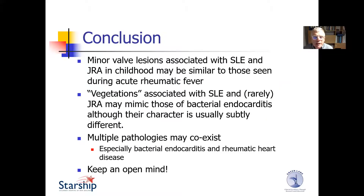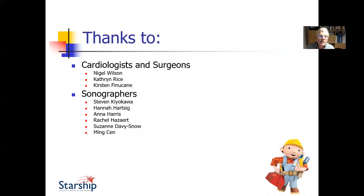In conclusion, minor valve lesions are associated with SLE and JRA in childhood and may be similar to those seen during acute rheumatic fever. Vegetations associated with SLE and JRA may mimic those of bacterial endocarditis, although their character is usually subtly different. Multiple pathologies can co-exist, especially bacterial endocarditis and rheumatic heart disease. Some of these things come out in the wash over time with their correct diagnosis, so it pays to keep an open mind. Thank you very much for listening.